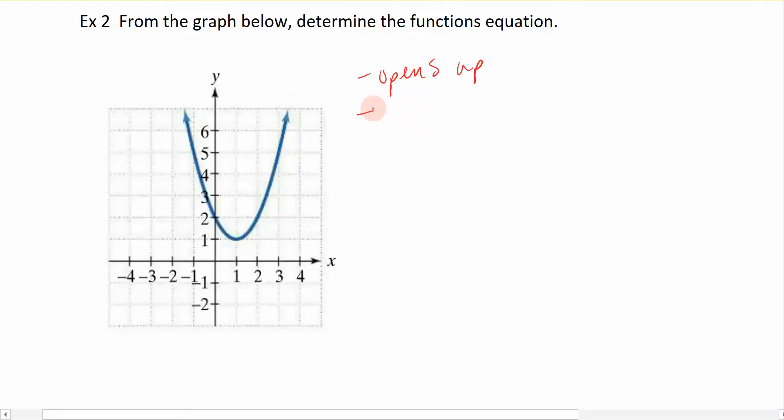Another characteristic I can identify on this graph is the vertex. Here the vertex is located at the point (1, 1). So we have a vertex at (1, 1).